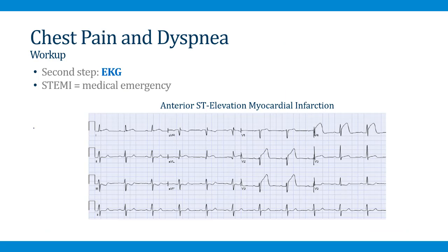Once you've assessed the vital signs, the next step is to get an EKG. This is always done immediately on arrival to the emergency room for patients with chest pain or dyspnea, because you want to identify STEMIs. Any patient who has ST elevations on their EKG is having an ST elevation myocardial infarction — a medical emergency — and so the EKG can quickly change your management by letting you know the patient is having an ST elevation MI.